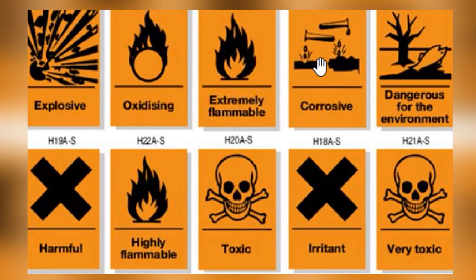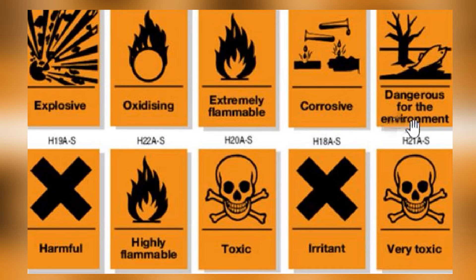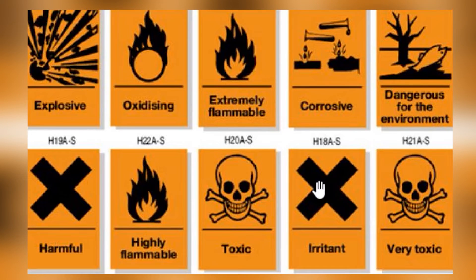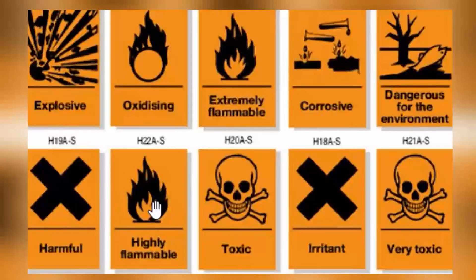People who understand these symbols are aware of essential chemical products and their dangers for the environment. For example, it features an image of the source material and chemical products such as carbon-based chemicals. The second example is an irritant or an irritant wound. Milk is oxidizing — extremely flammable and highly flammable.